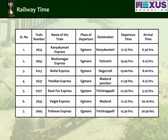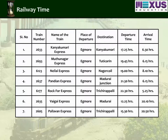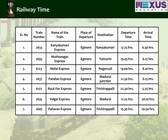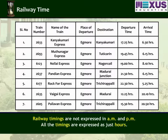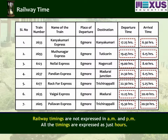See the following table. Have you seen a table like this anywhere? It's a railway timetable. Observe the timing given in the table. How many hours are there in a day? 24 hours. Yes. We generally call 24-hour clock time as railway time. Railway timings are not expressed in AM and PM; all the timings are expressed as just hours.